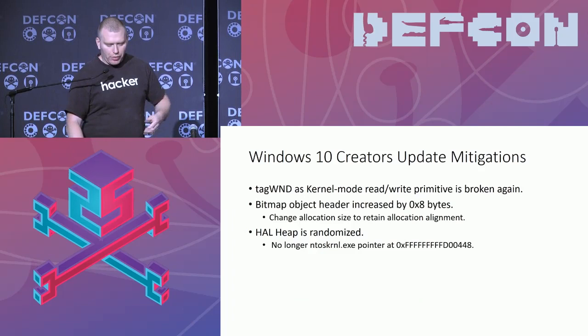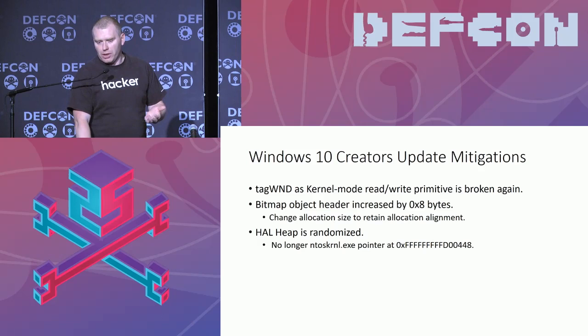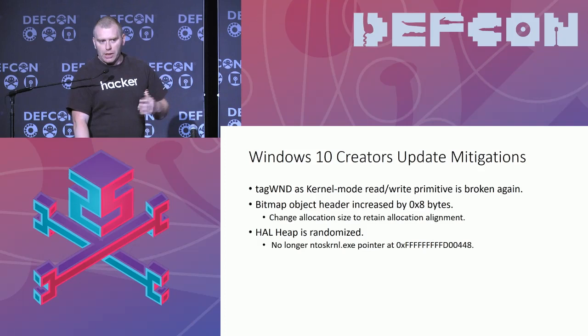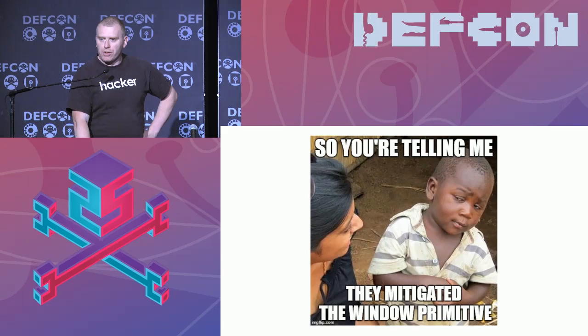Some additional changes: the size of the bitmap object header is increased. This doesn't break the primitive, but we need to make sure we change the size so that location alignment still works. And now the kernel heap is also randomized, so we don't know where the NT pointer is anymore. So they did try to do a lot to break the window primitive — let's see if that actually works.